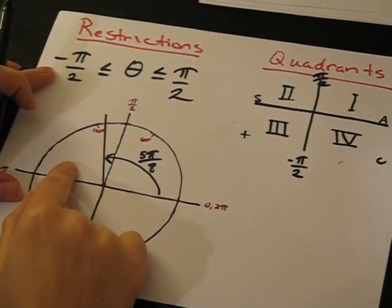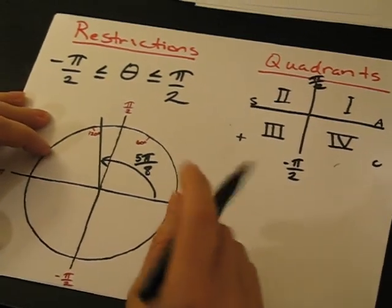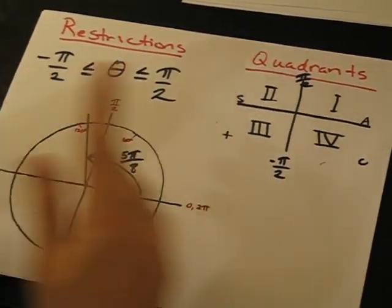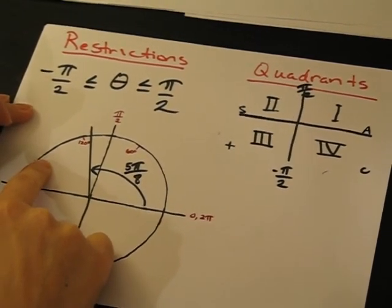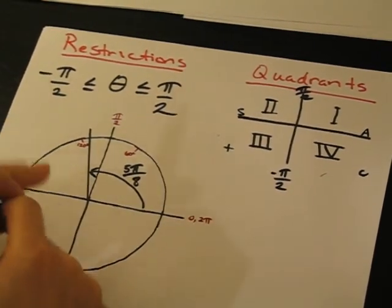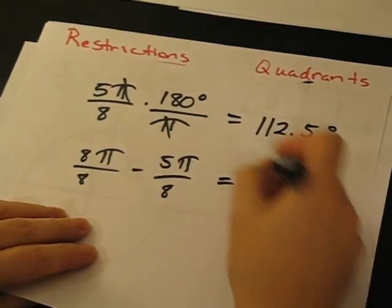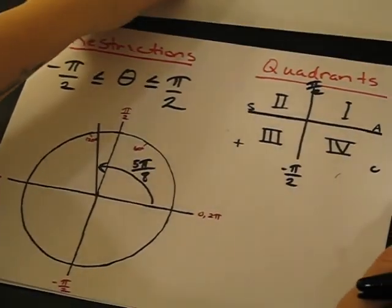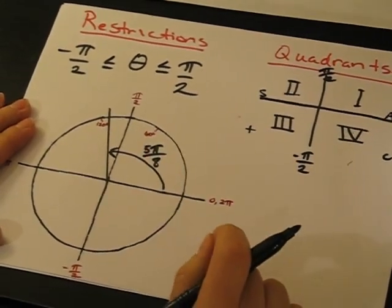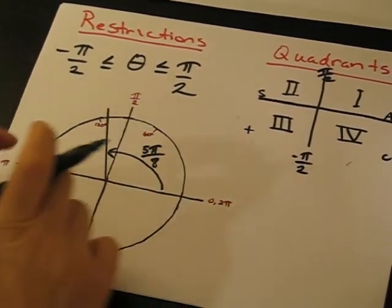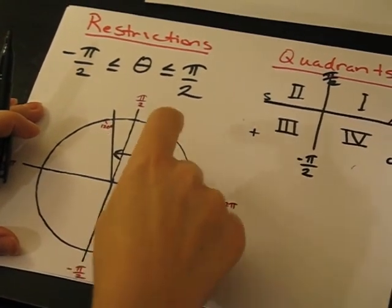In our case, five-pi over eight is in quadrant two. And so we know, based on previous experience, that all students take calculus. Sine is positive in quadrant two. So our reference angle, which is the 3-pi over eight, is going to be positive. Knowing that angle is going to be positive, that helps us to determine what quadrant we're going to end up in our final angle. And so we're going to put our final angle into quadrant one so that it's positive.